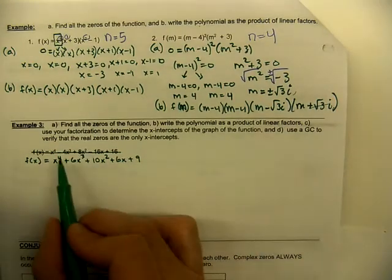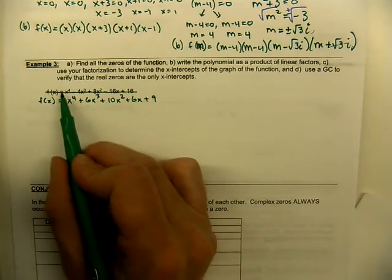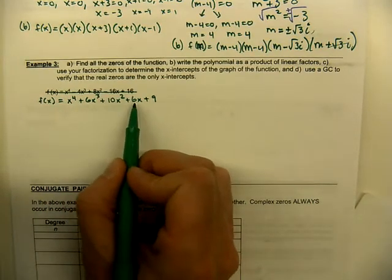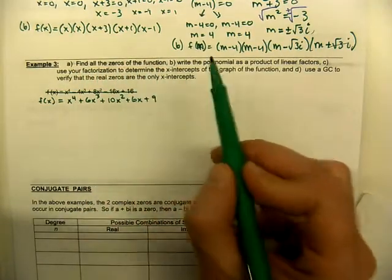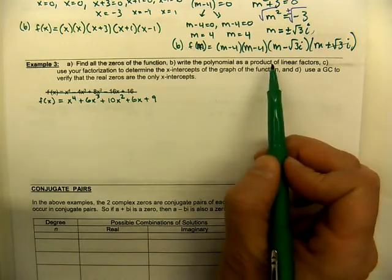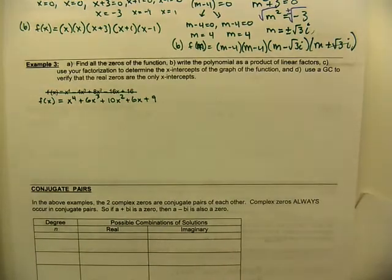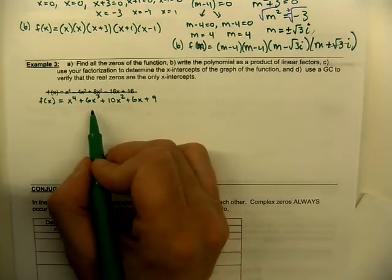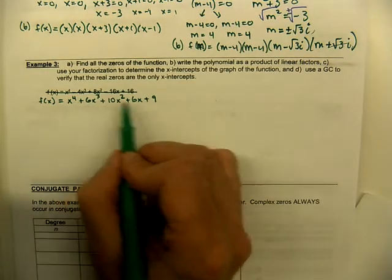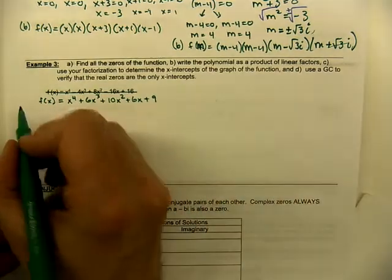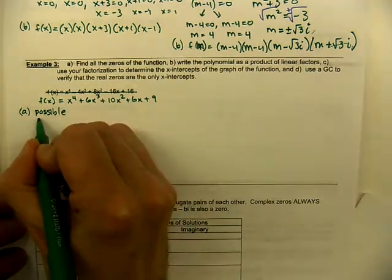In example three, I'm changing the problem. We have x to the fourth plus 6x cubed plus 10x squared plus 6x plus 9, a fourth degree polynomial with five terms. We'll find all zeros and write it as a product of linear factors. Since it has five terms, we're not factoring directly. Instead, we use the rational zero test — listing possible zeros as factors of the constant term nine (plus or minus one, three, nine) divided by the leading coefficient, which is one.